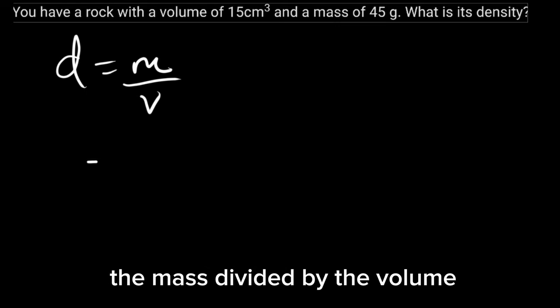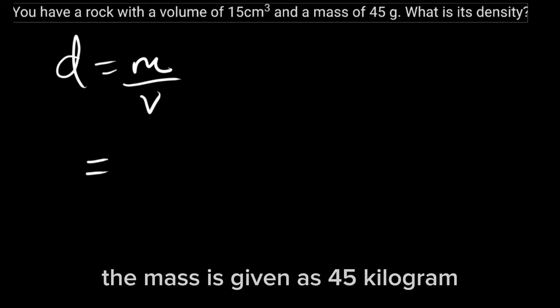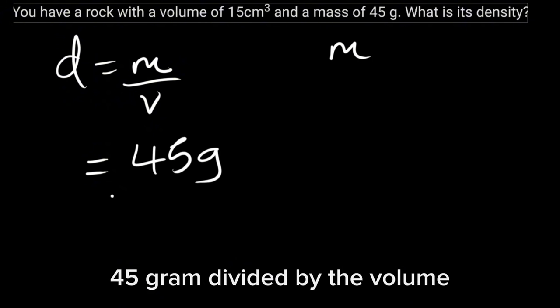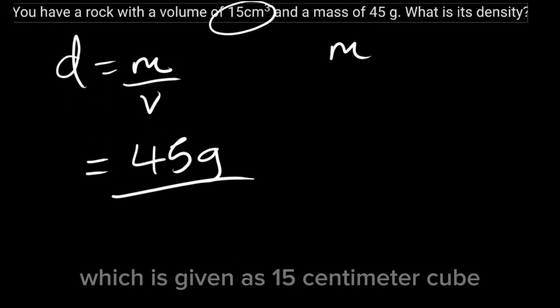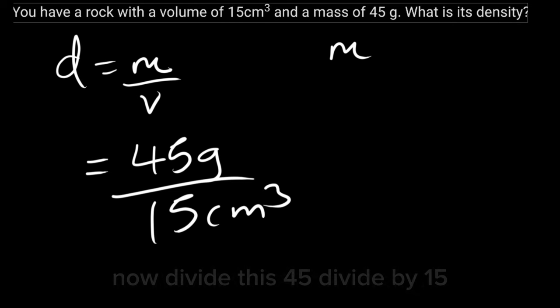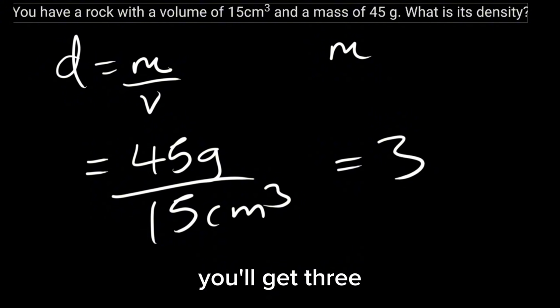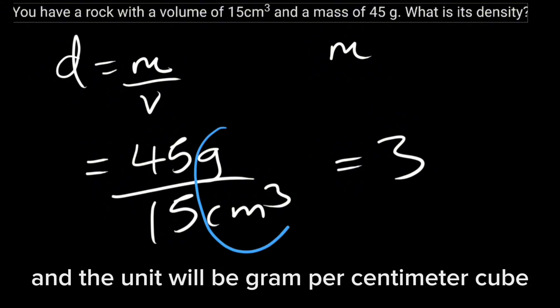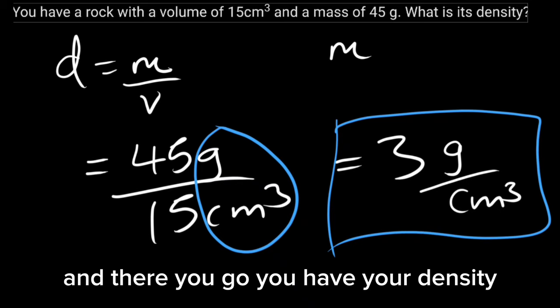The mass is given as 45 grams divided by the volume which is given as 15 centimeter cube. To divide this, 45 divided by 15, you'll get 3, and the unit will be 3 grams per centimeter cube. And there you go, you have your density.